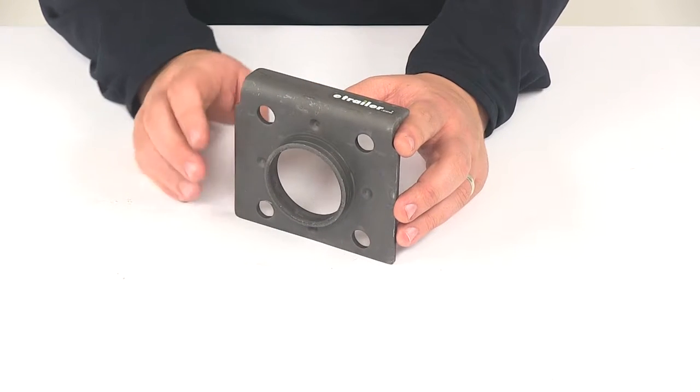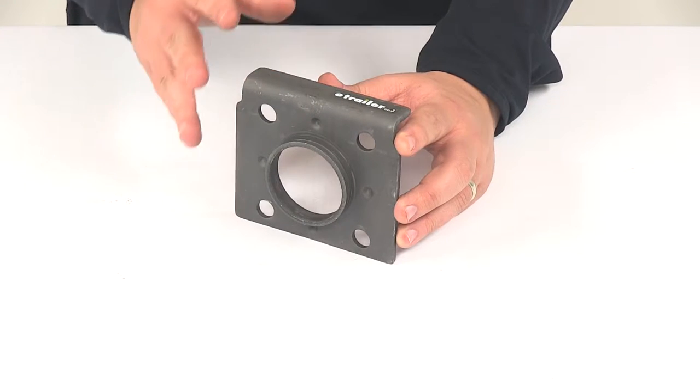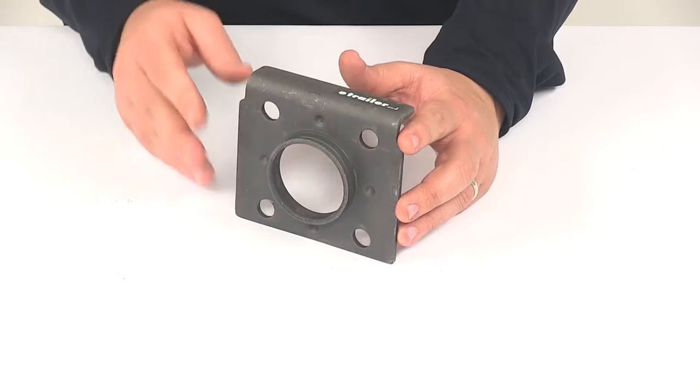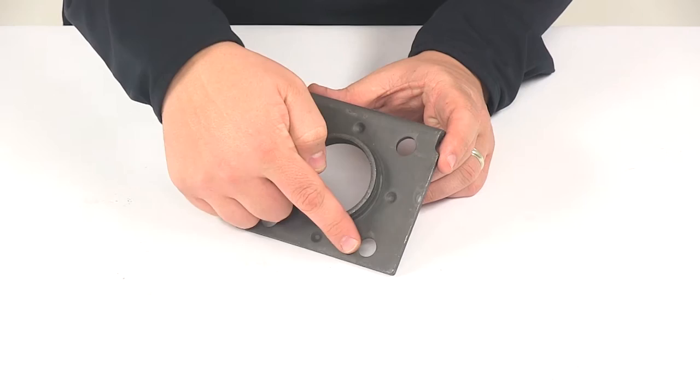This is designed for use with the TJB series jacks, but it can be used for other jacks as well as long as the specifications match with the specifications that you need. This is a weld-on design. It's going to work with a half-inch diameter pull pin.